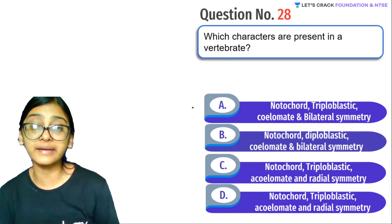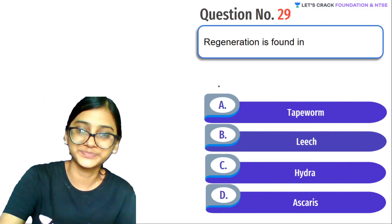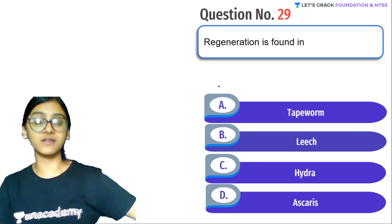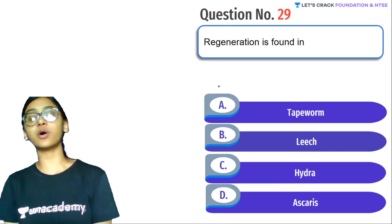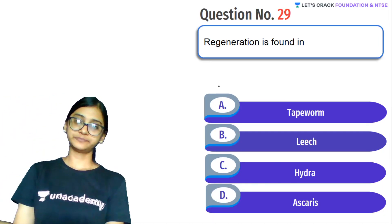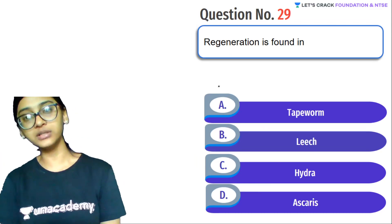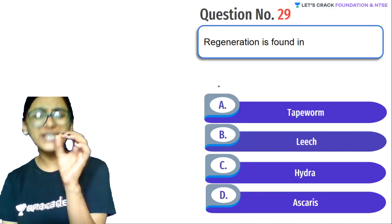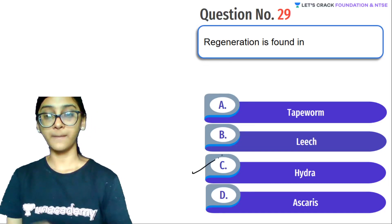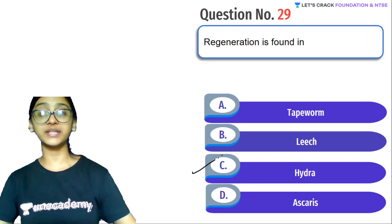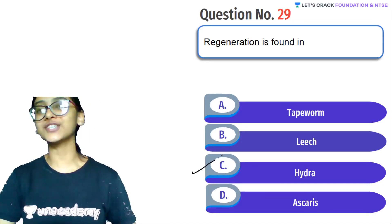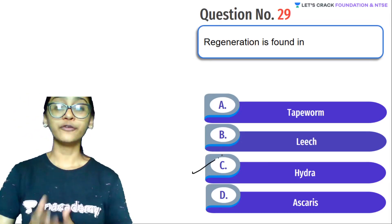Last question: Regeneration — regrowing a lost part — is found in which among the following? Options: tapeworm, leech, hydra, ascaris. Regeneration does not happen in all organisms — only in a few. Yes, the answer is hydra, similar to planaria. Only in a few organisms do we see regeneration. That was the last question for today, from the chapters heredity and evolution and diversity.